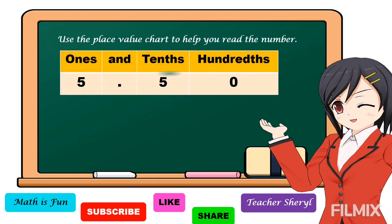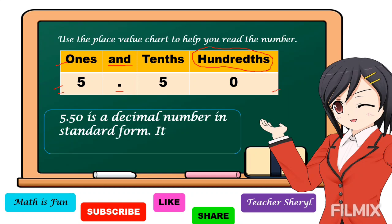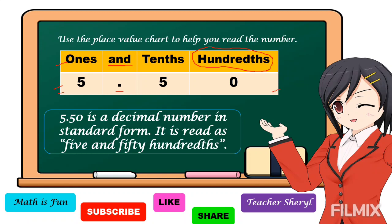This is our place value chart. On top is the place value and below is our number. The decimal point we read as AND. If we're going to read a decimal number, we read from left to right. Then, we say the place value of the last digit. So, 5.50 is a decimal number in standard form. It is read as five and fifty hundredths.